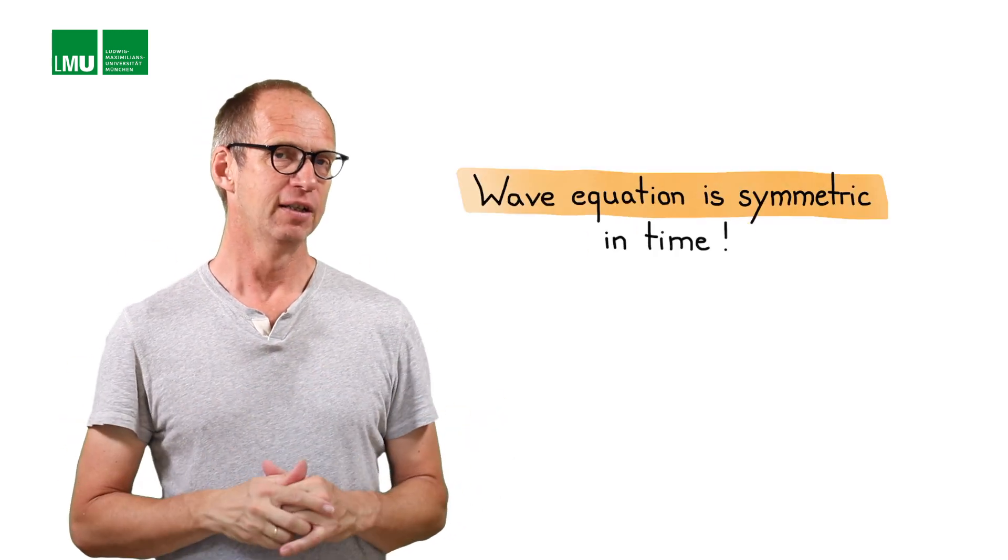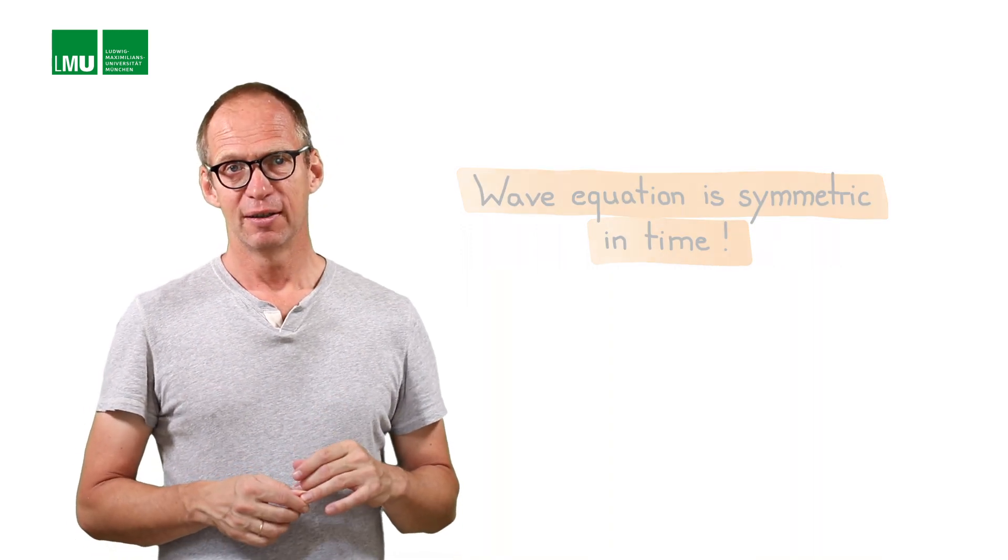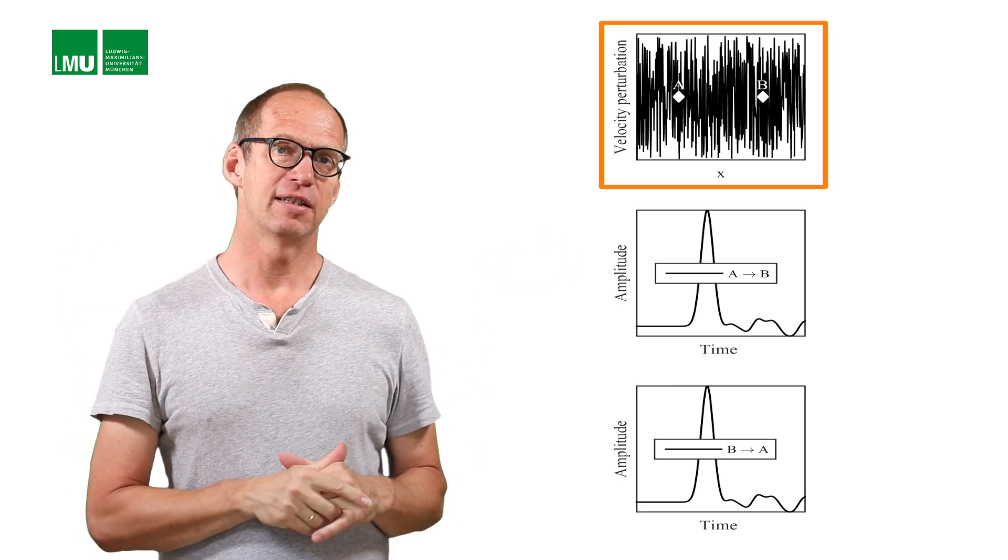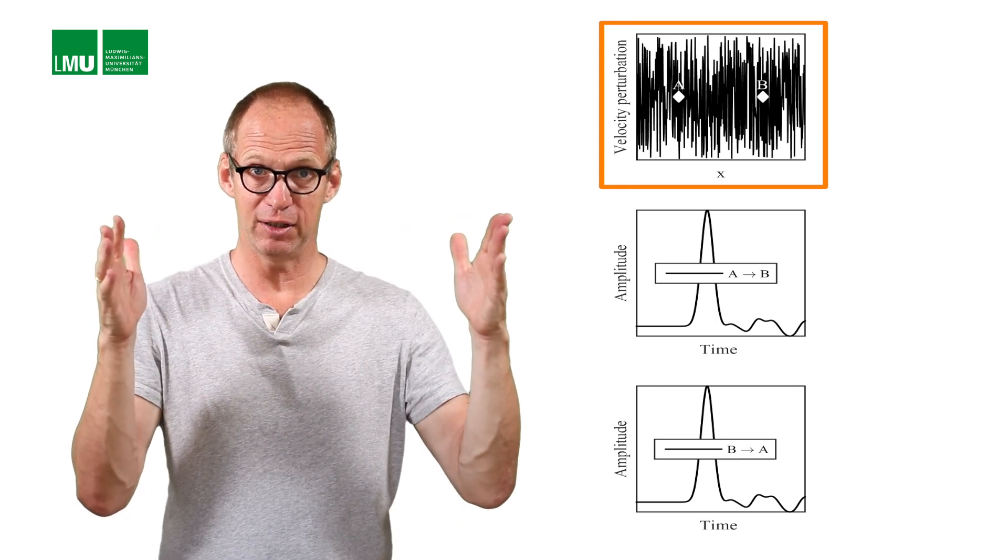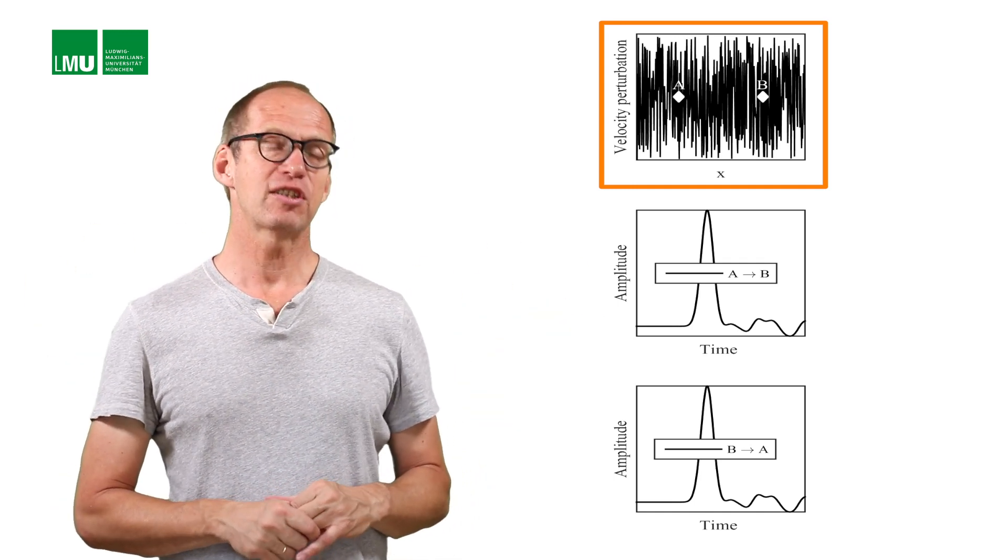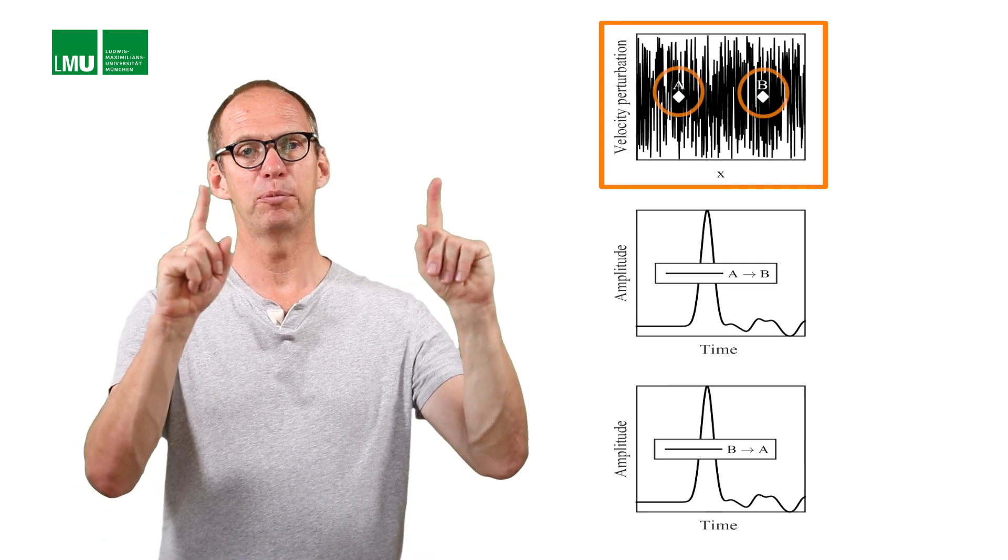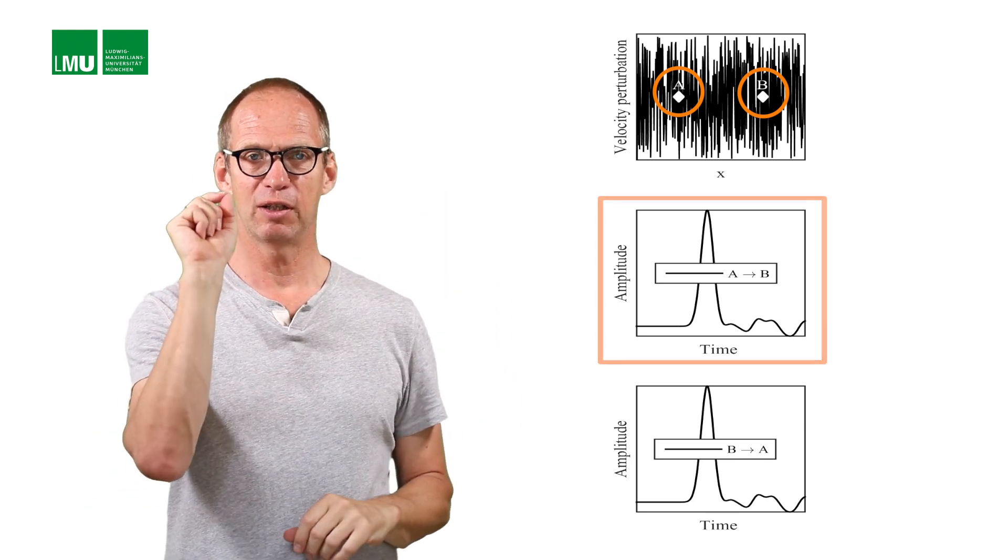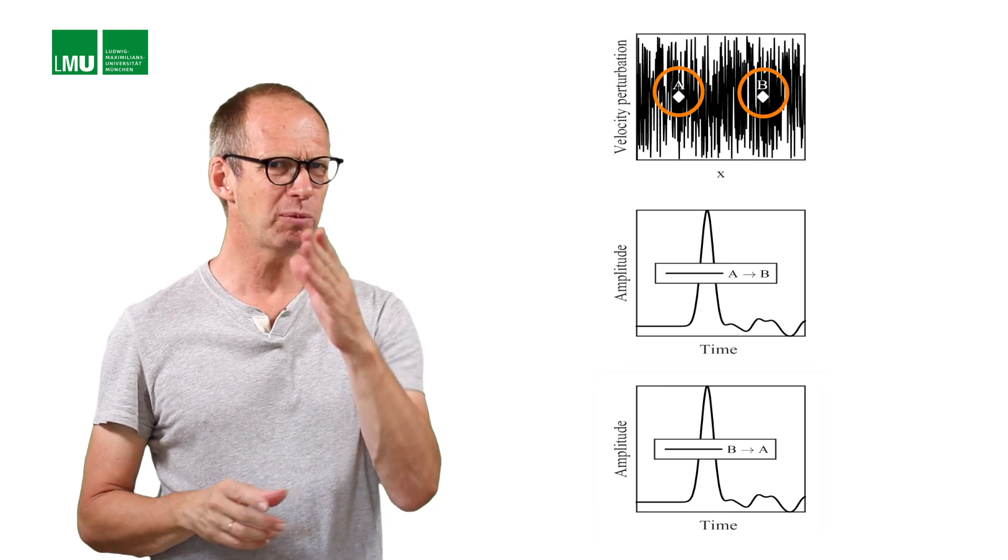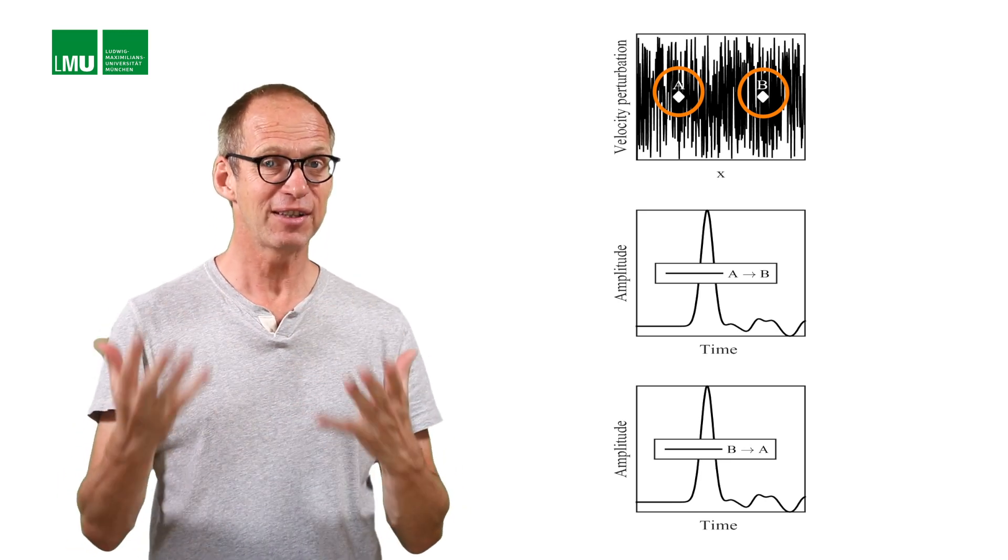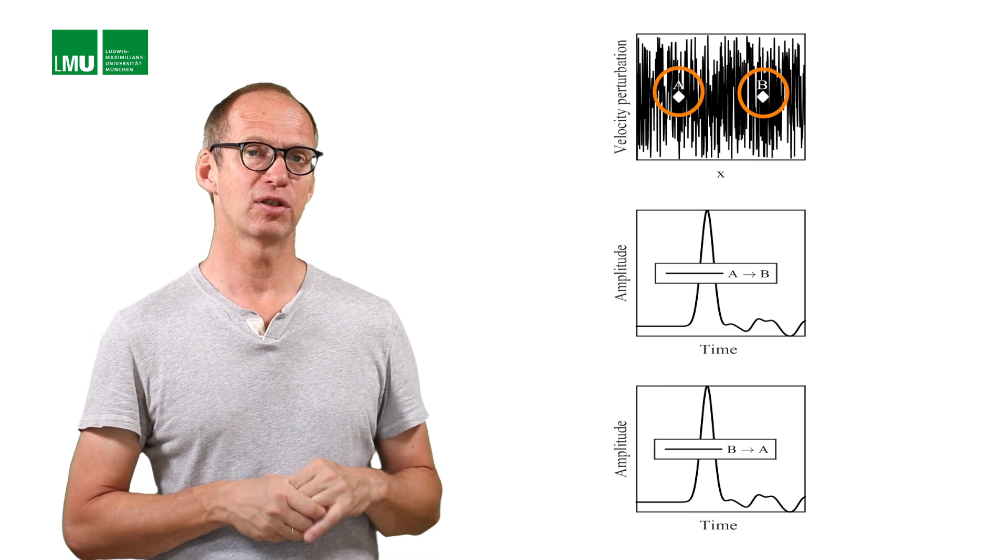Our linear wave equation actually has a very interesting property. It's symmetric in time. I would like to illustrate that with an example what that means. You see here a one-dimensional example of a complicated model. It's the structural heterogeneity here, that's the velocity model as a function of space, is very complicated, it's actually random. Let's assume that we have two points, a and b. And we start with injecting a source at a, recording at b, and then we inject a source at b, recording at a. Would you immediately think that this gives you exactly the same result? I don't think it's so intuitive, but actually that's the result, the consequence of the fact that the wave equation is symmetric in time.